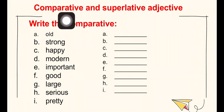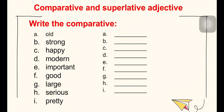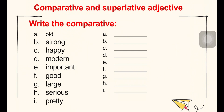With comparative adjectives, when the adjective has one syllable we add '-er'. For words that have two syllables ending in Y, we change Y to I and add '-er'. For adjectives with more than two or three syllables, we add 'more' before the adjective — like 'beautiful', which has three syllables, so we say 'more beautiful'.